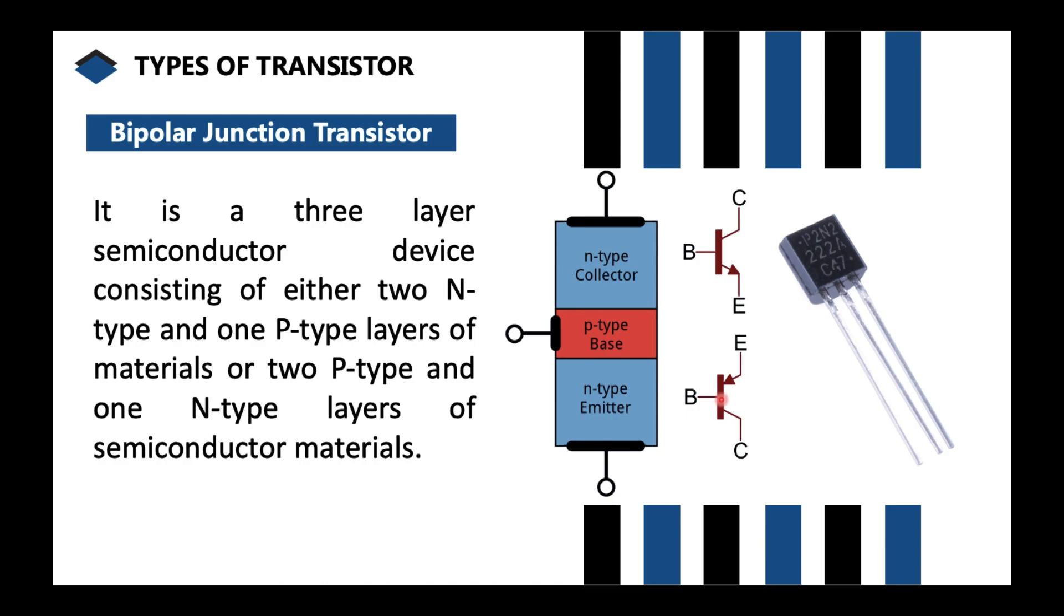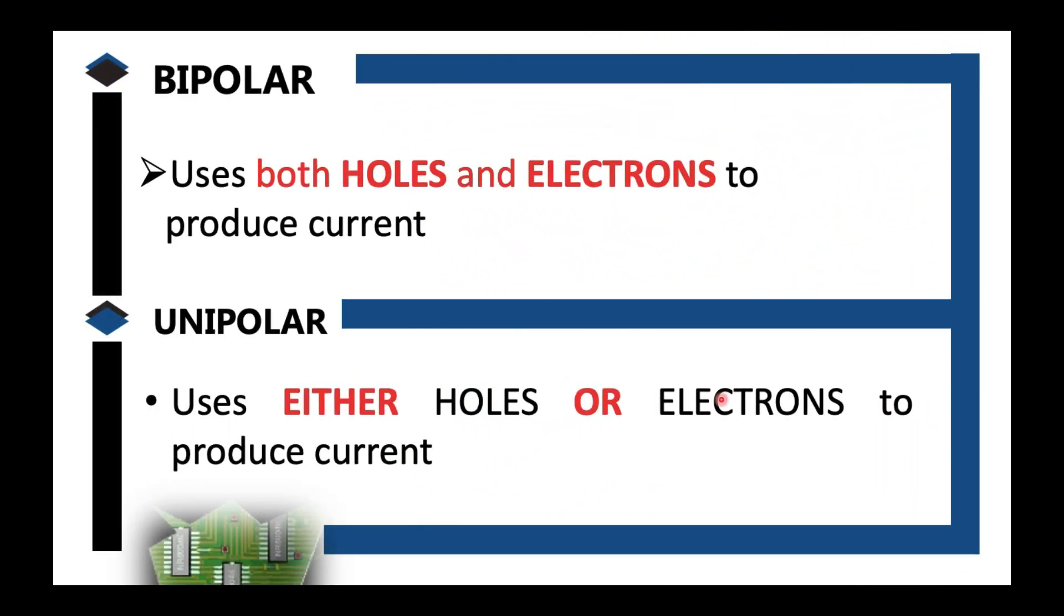So why is it called bipolar junction transistor? First thing first is the term bipolar. From the previous part of the video, BJT is treated as a bipolar device while FET is a unipolar device. When you say polar, you might be thinking of polarities like a battery.